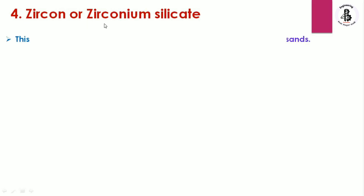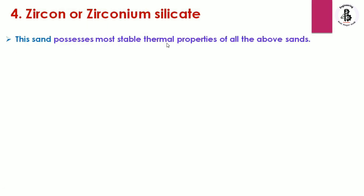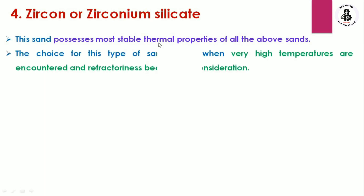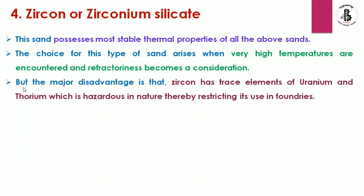Zircon, or zirconium silicate, possesses the most stable thermal properties of all the above sands. It is most preferable when very high temperatures are encountered and refractoriness becomes a consideration. However, the major disadvantage is that zircon has trace elements of uranium and thorium, which are hazardous in nature, thereby restricting its use in foundries.